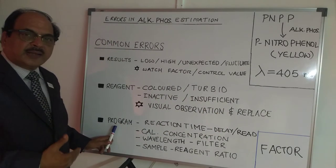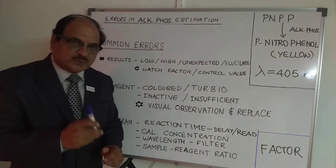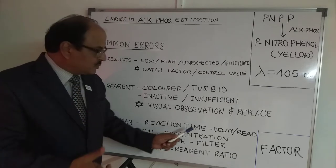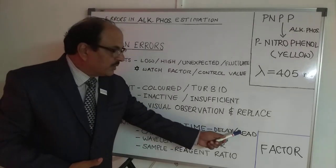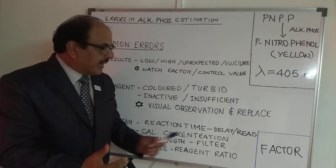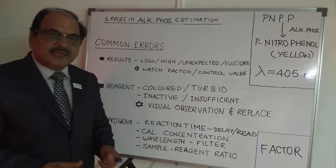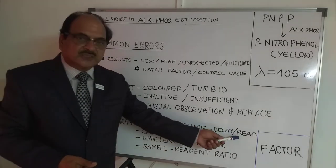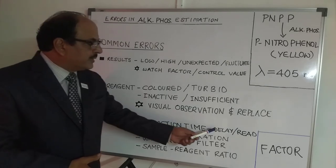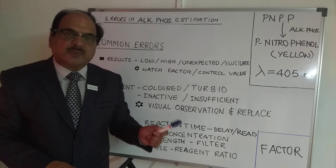The next category is program-related errors. Since this is a kinetic assay, it must have a reaction time, which you monitor in terms of two areas: the delay time and the read time. Delay time is the period before readings start after your reagent and sample are mixed. The read time is when the absorbance is measured during that period. Delay time is normally 60 seconds and read time is another 60 to 120 seconds, depending on what the manufacturer specifies. Ensure that your delay and read times are fed properly into the program as per the instruction manual.